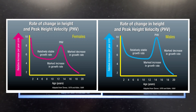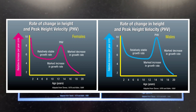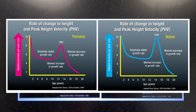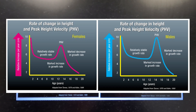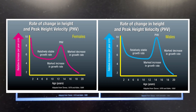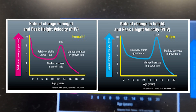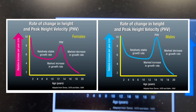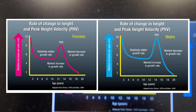On the x-axis it starts at age two and goes to age 20. On the left y-axis the bottom is two centimeters and the top is 10 centimeters of growth per year. At least for girls, their peak height velocity is around 12 to 14 years old.